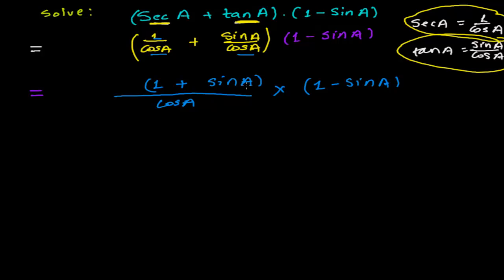A plus B times A minus B equals A squared minus B squared. So (1 plus sin A) times (1 minus sin A) equals 1 squared minus sin squared A, divided by cos A. And 1 squared is just 1, so I have 1 minus sin squared A over cos A.